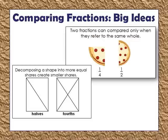After focusing on what fractions are and how to build them, we also need to address comparing fractions. A key big idea is that two fractions can only be compared when they refer to the same whole. For example, if I ate one-fourth of a large pizza and Jenny ate one-fourth of a small pizza, you can't really tell who ate more because you don't know how big each pizza is. Another concept is that decomposing a shape into more equal shares creates smaller shares — a hard but important concept for students.